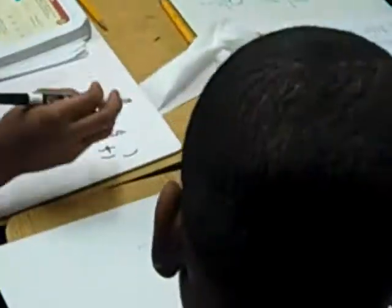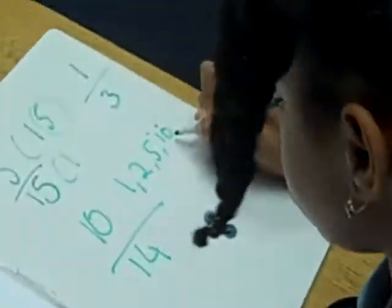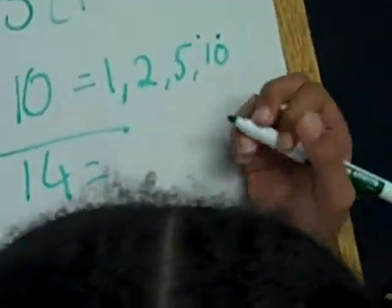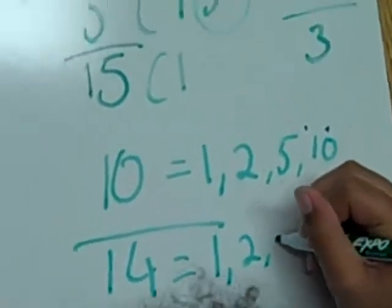All right. Let's look at the next one. Ten fourteenths. Good job. Good job, Daniel. Okay. Find the factors for ten. Find the factors for fourteen.